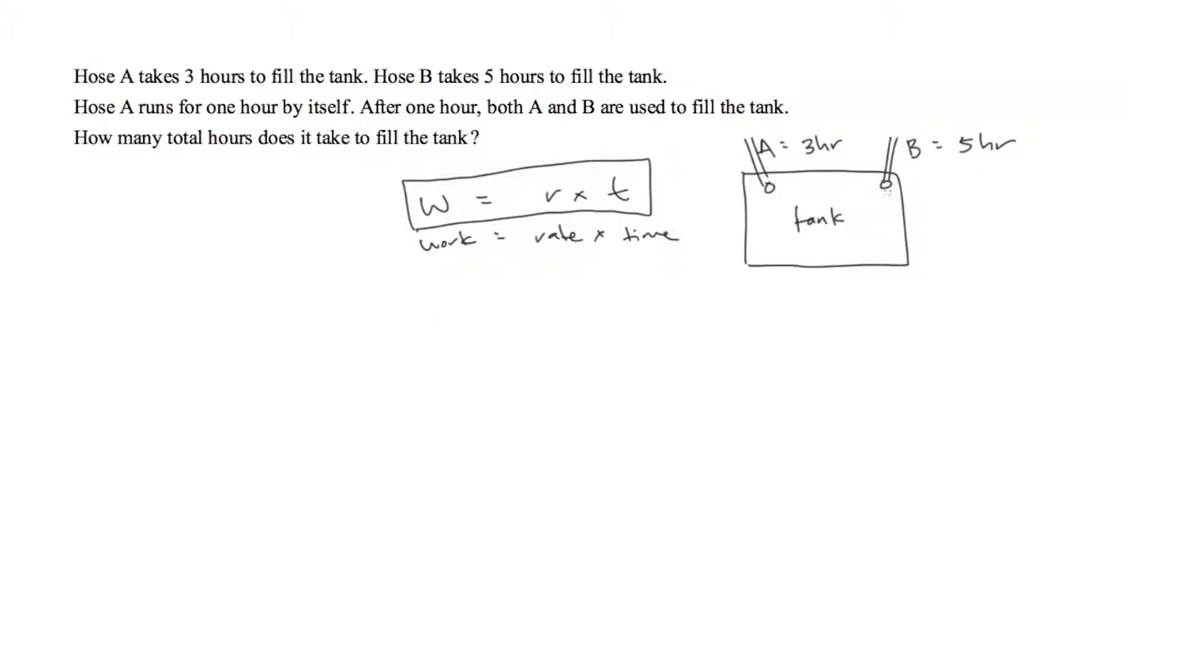So what we want to do is make separate equations for both Hose A and Hose B. We have the work that Hose A does is equal to the rate that it works times the time that it works. We make a separate equation for Hose B, and WB is equal to RB times TB.